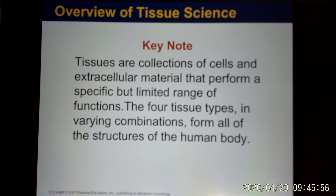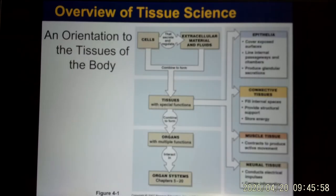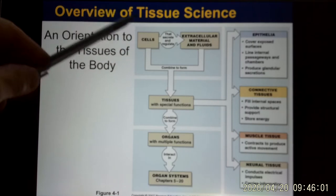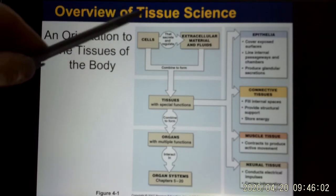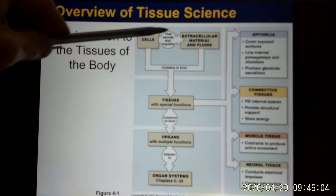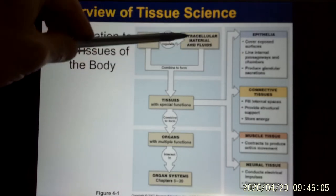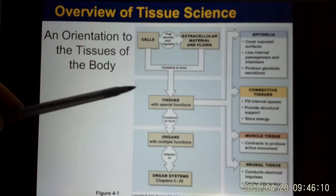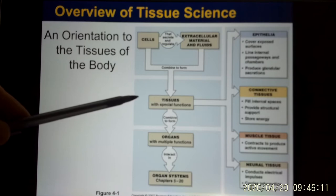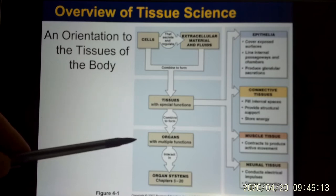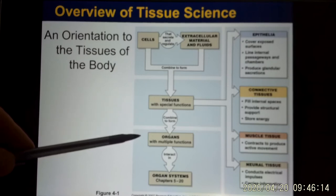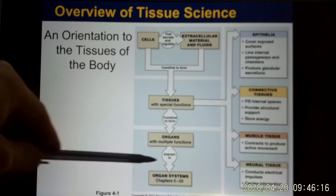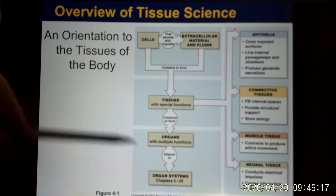Tissues are made of a lot of cells. We put a lot of cells and outside fluid together and that is the tissue. So now we are at the tissue level. When you put a lot of tissues together, we have an organ. That will be our next topic — we will talk about different organs and organ systems.